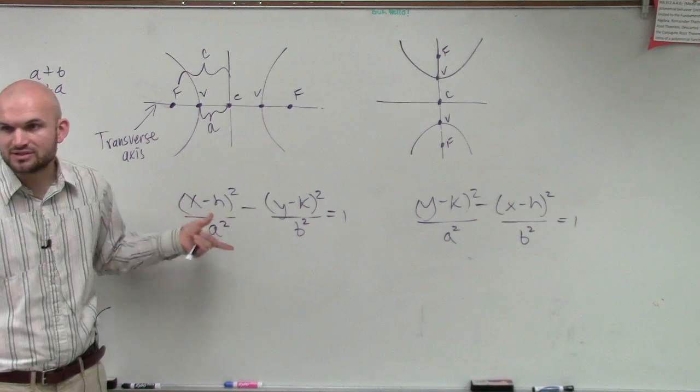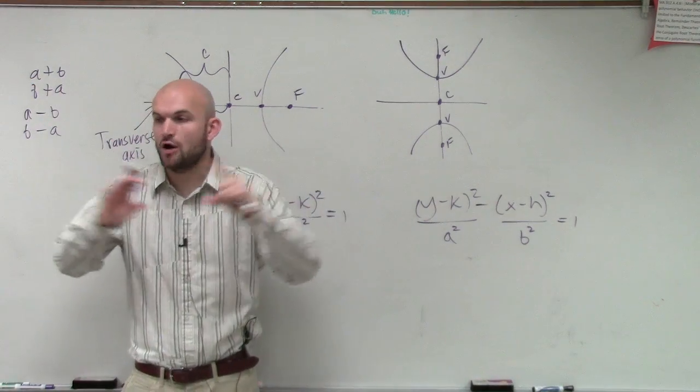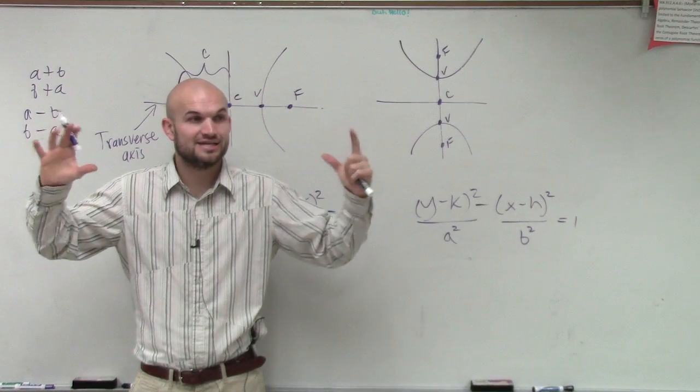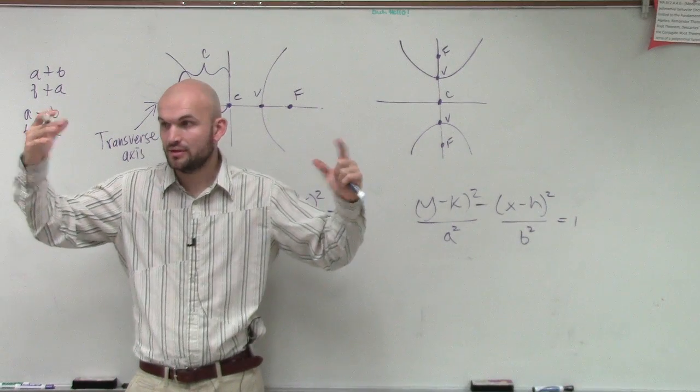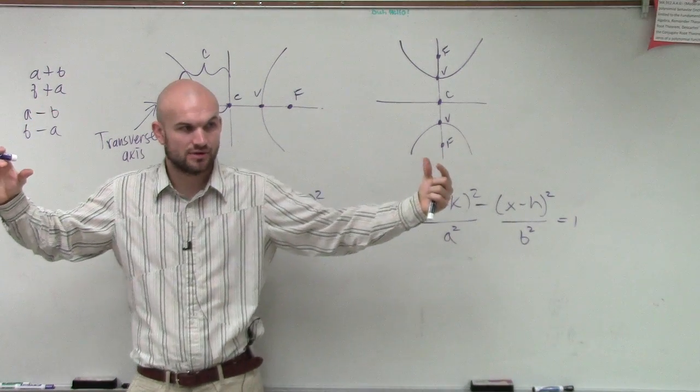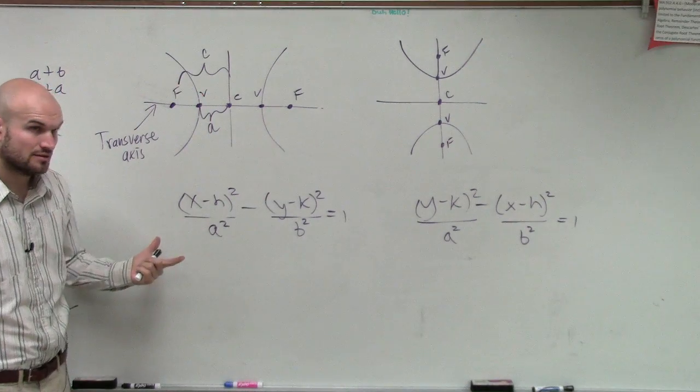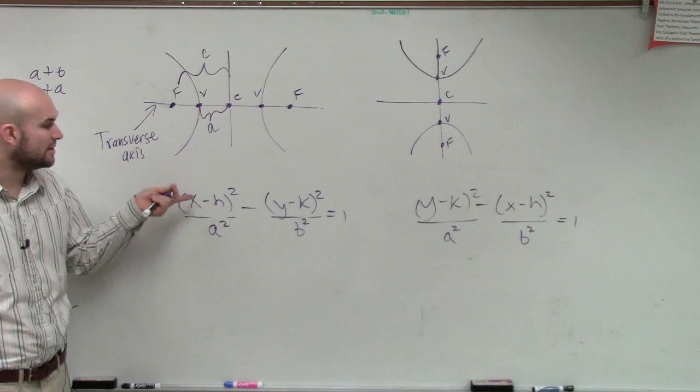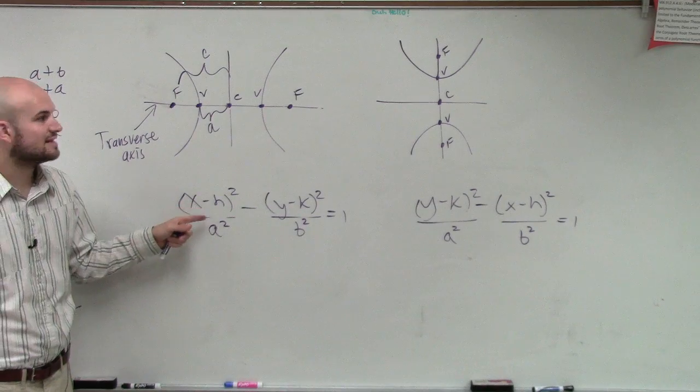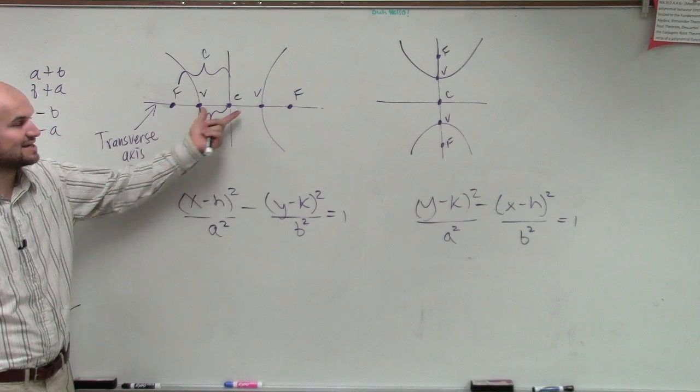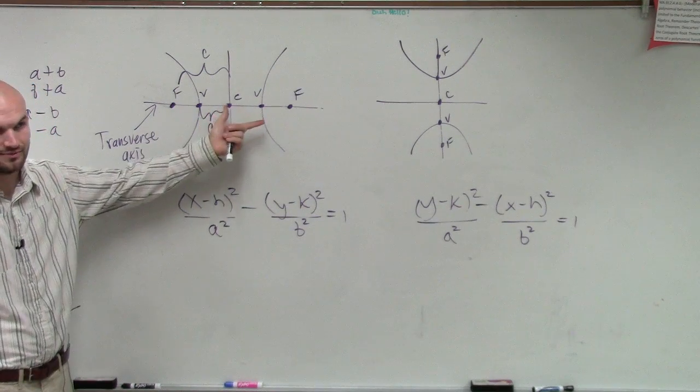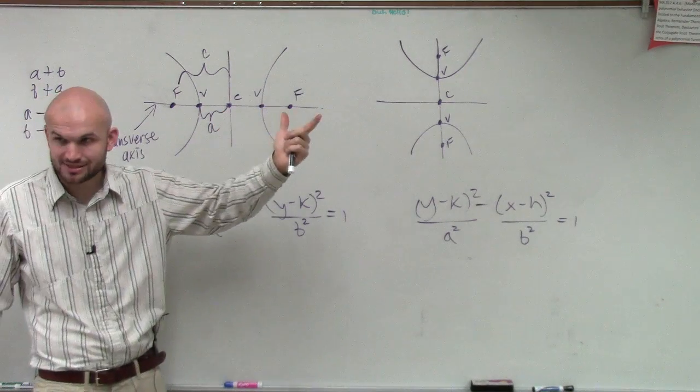Well, notice there is a little difference in these two equations. Here, remember we always talk about, on an ellipse, it was always a major axis when your A², was under the X, because A was always your major axis. Here, when our A is under our X, that means our transverse axis is going to be horizontal. It's not a major and a minor axis. It's now going to be a transverse axis.